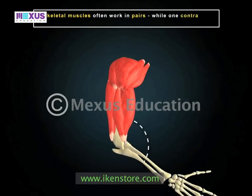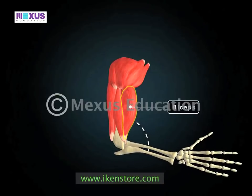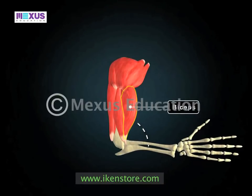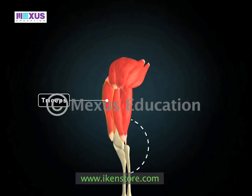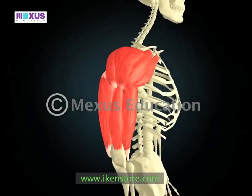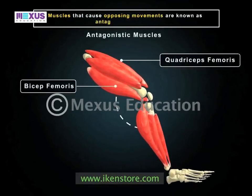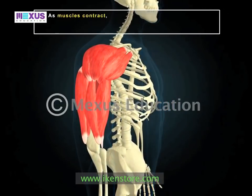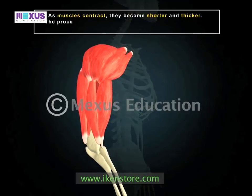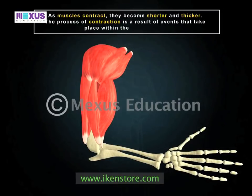Skeletal muscles often work in pairs: while one contracts, the other relaxes. For example, the bicep muscle in the upper arm contracts when the lower arm is raised up. At this time, the tricep muscle relaxes. To straighten the arm out again, the triceps muscle contracts while the bicep muscle relaxes. Such muscles that cause opposing movements are known as antagonistic muscles. As muscles contract, they become shorter and thicker, the result of a complex series of events within the muscle cells.